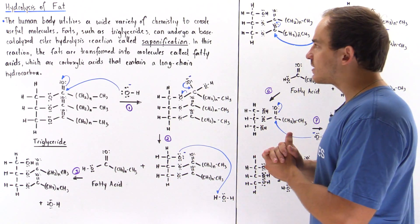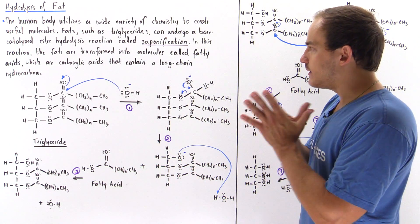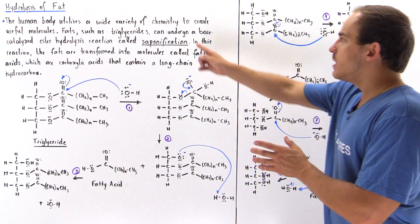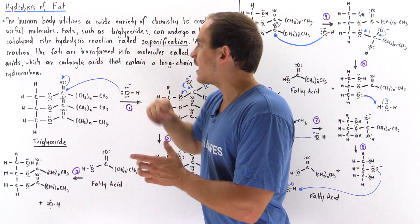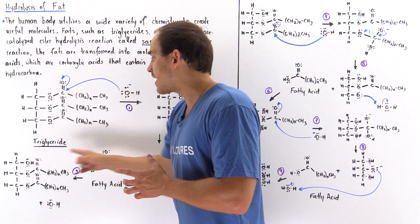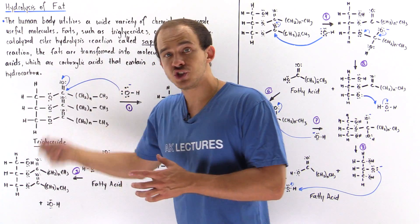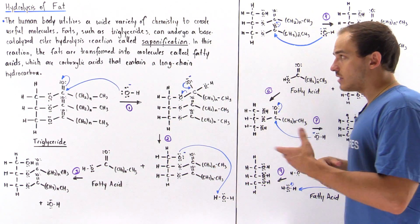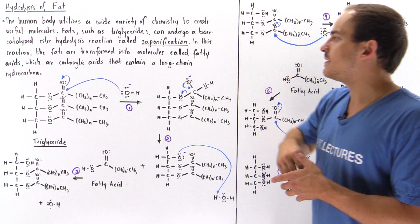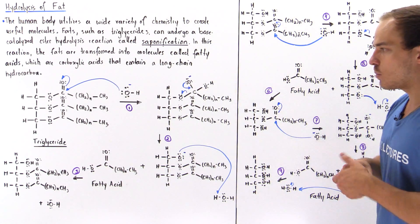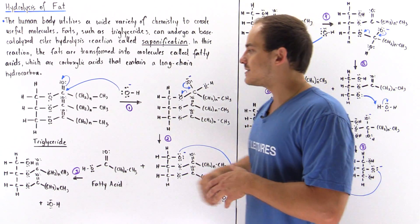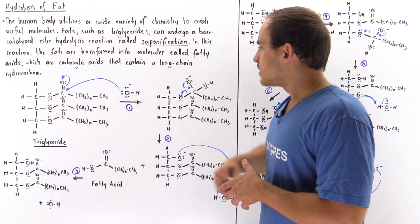In this lecture we're going to focus on the reaction mechanism of the base-catalyzed ester hydrolysis reaction — the hydrolysis of triglyceride into three fatty acids and glycerol — in a process known as saponification, which is basically the production of fatty acids from triglyceride.